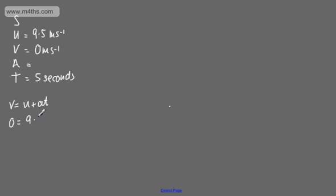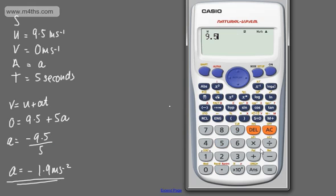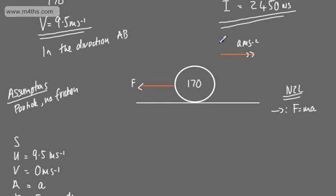Using SUVAT with V equals U plus AT, subbing in the values: 0 equals 9.5 plus 5A. Rearranging, A equals minus 9.5 over 5, which gives minus 1.9 m/s². So we now have the acceleration: minus 1.9 m/s².